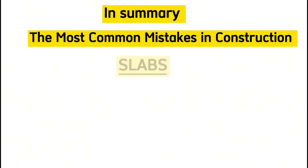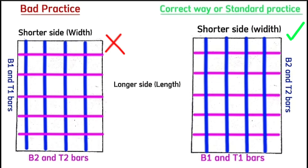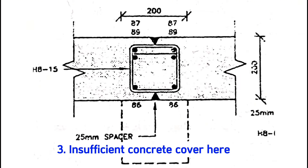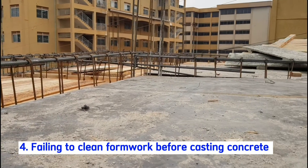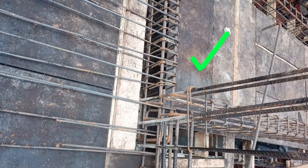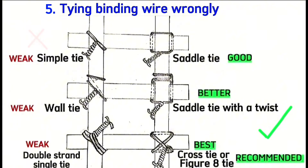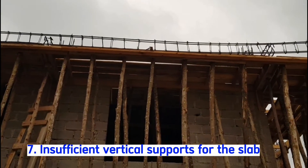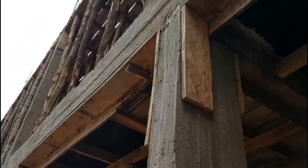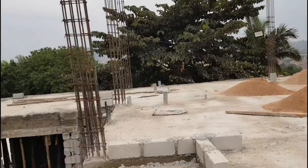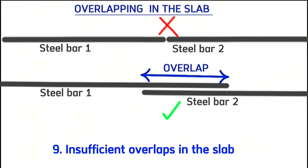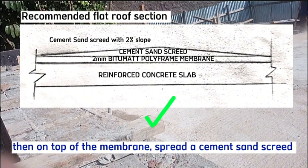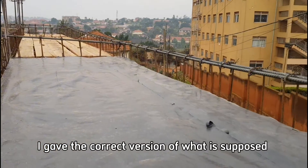In summary, the most common mistakes in construction for slabs are: laying steel bars wrongly, using the wrong class of cement, insufficient concrete cover, failing to clean formwork before casting concrete, tying binding wire wrongly, adding too much water in concrete, insufficient vertical formwork supports, insufficient curing, insufficient overlaps, and simply casting cement sand screed on flat roofs with no membrane — which eventually leads to leaking. The correct version of what should be done for each of the above has been provided.